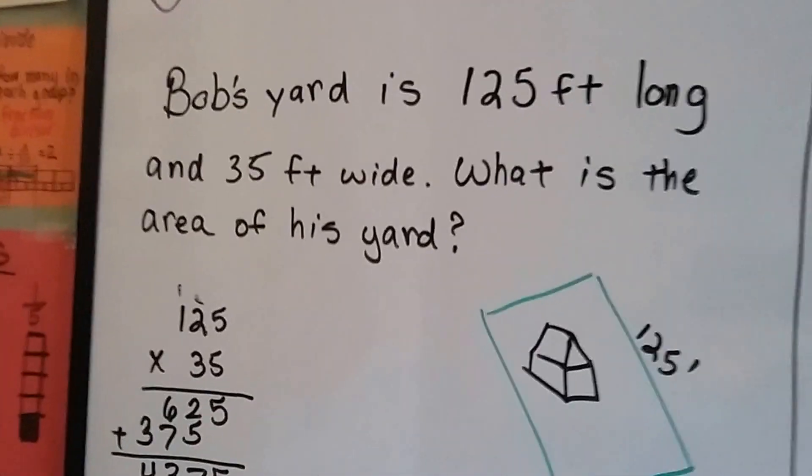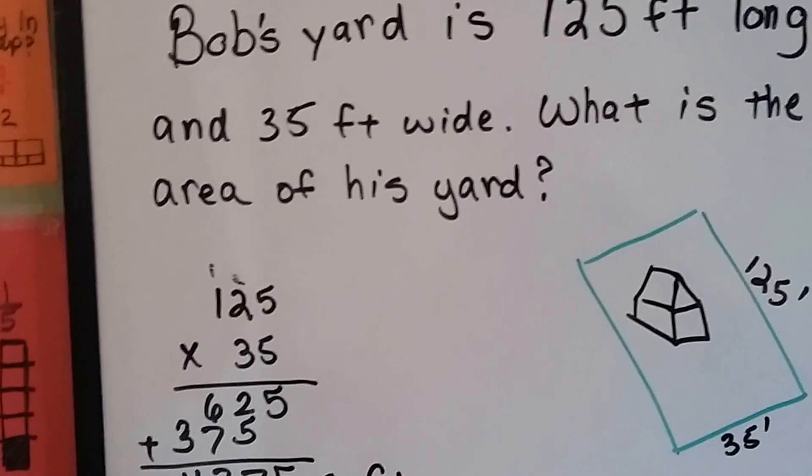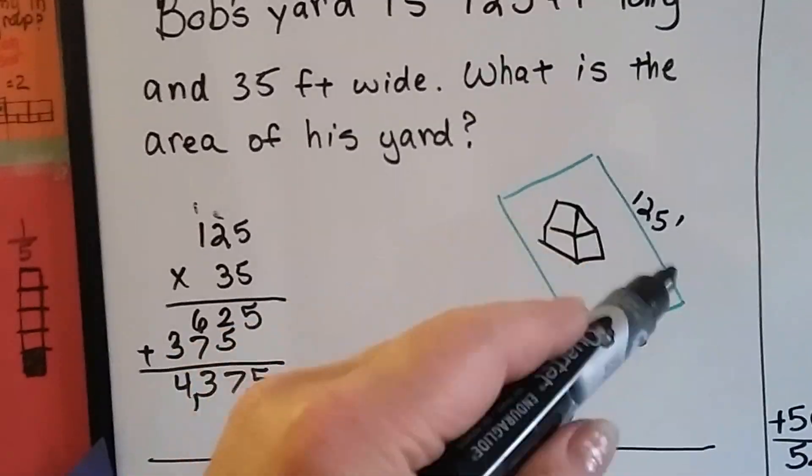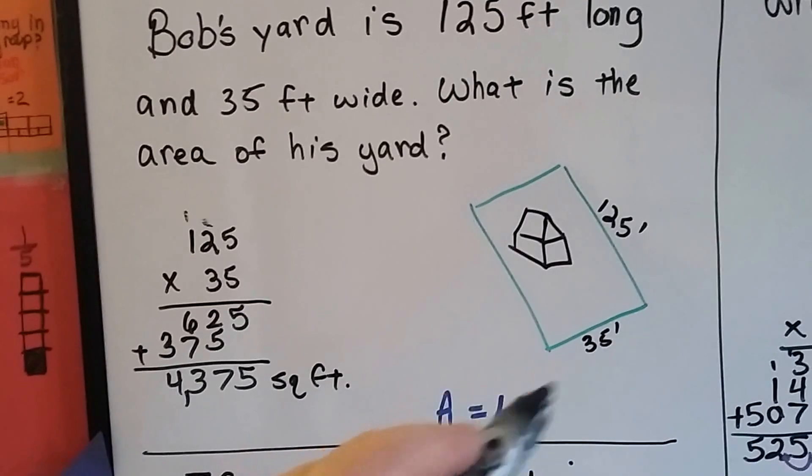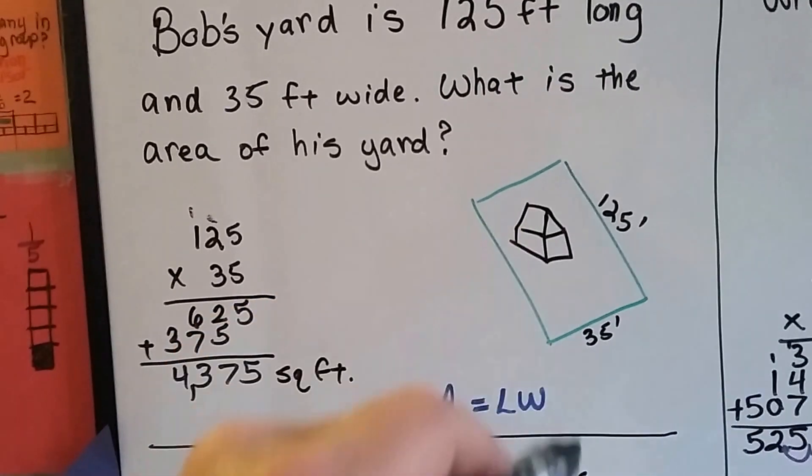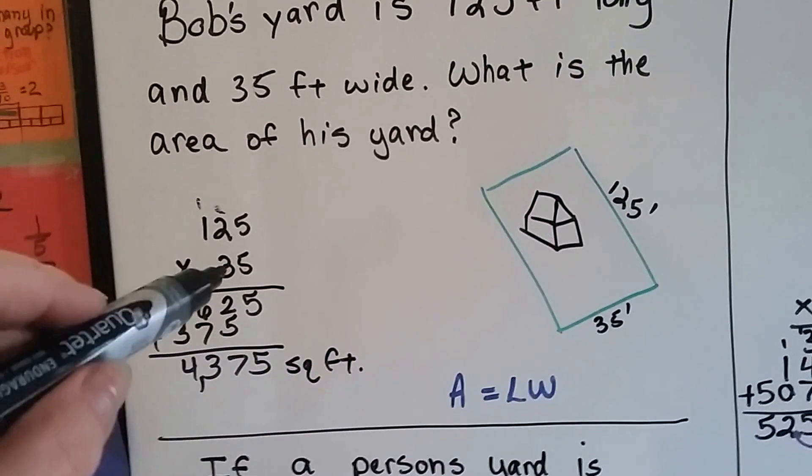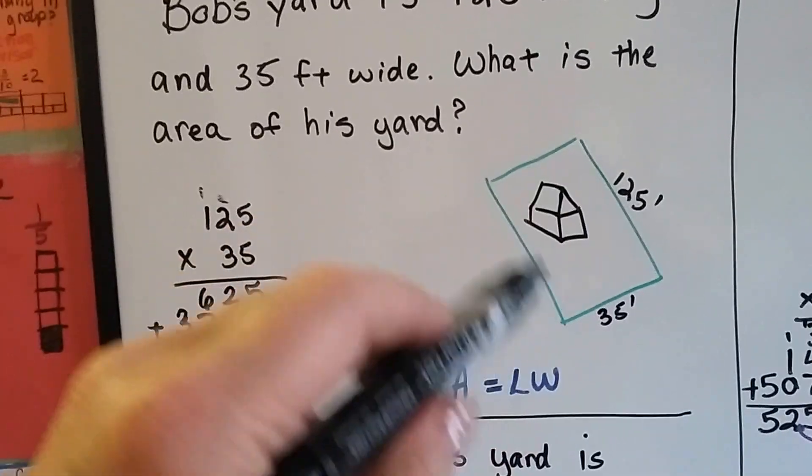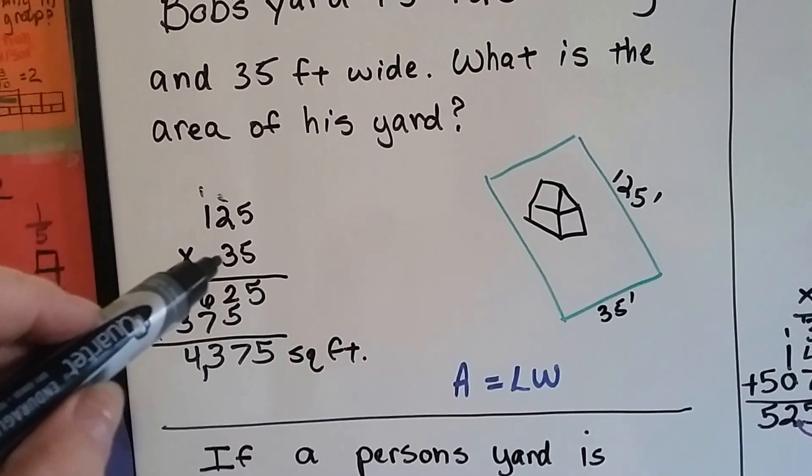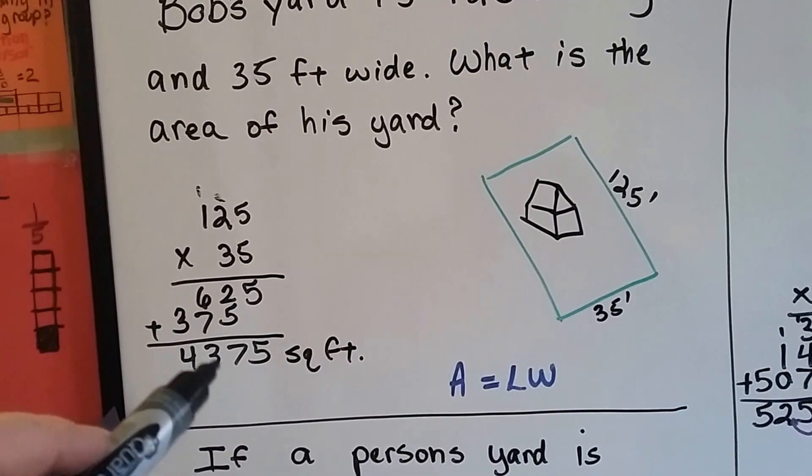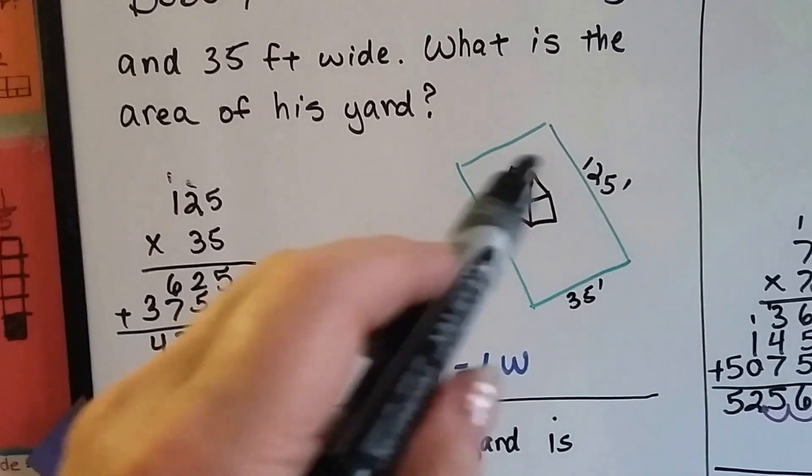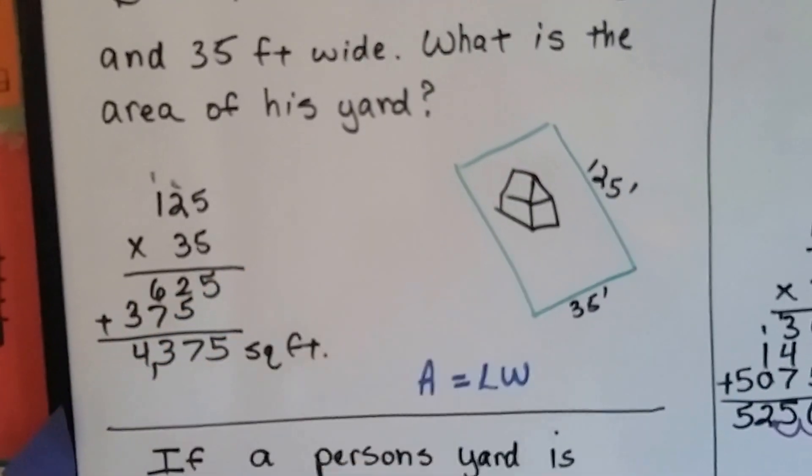Bob's yard is 125 feet long and 35 feet wide. What is the area of his yard? We just need to multiply these two numbers together and we'll get the square footage, all the inside area. So, 125 times 35 comes out to 4,375. And it's important we put square feet because these are feet and the units are square.